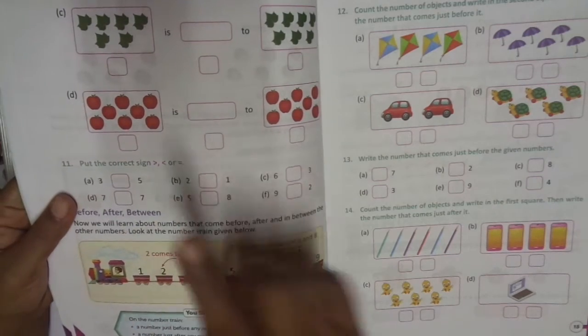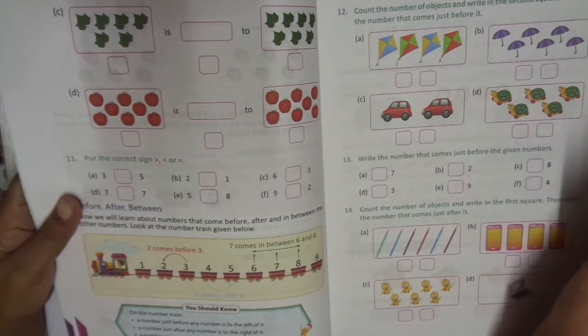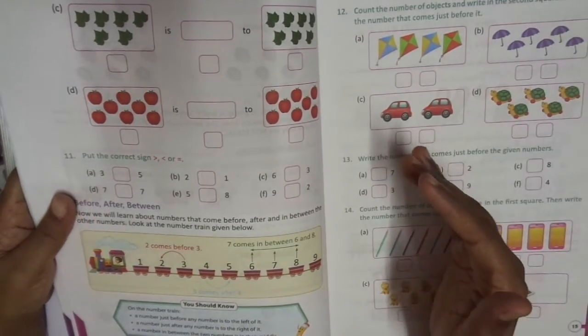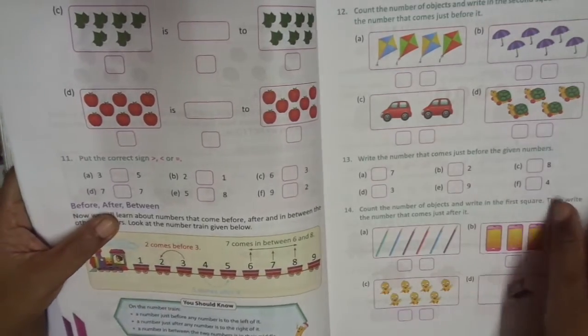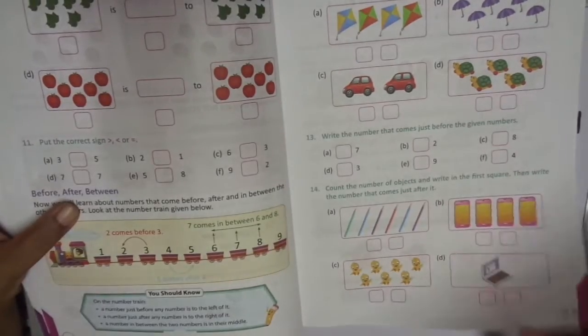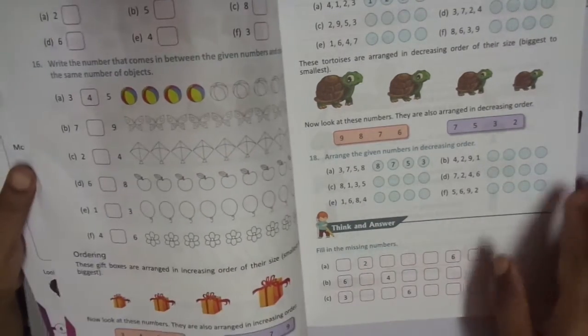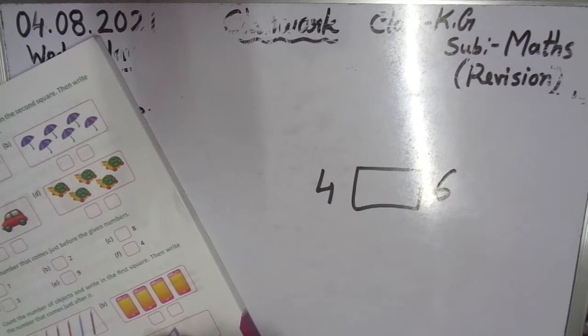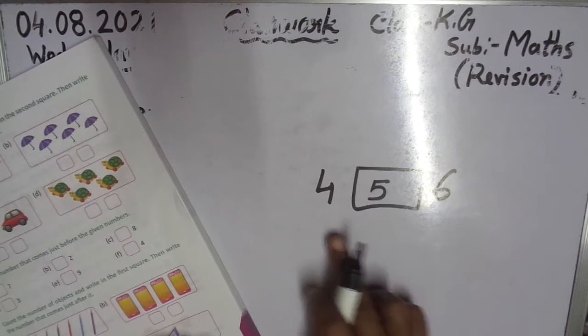Before, after, between — it's very important. Before number, after number — it's very easy. After 2 is 3, after 3 is 4, after 5 is 6. Before number means backward. Before 3 is 2, before 6 is 5. Between number — this page also practice. See here: between number. Follow me. 4 and 6 — 4, 5, 6 — so 5 comes in between 4 and 6.